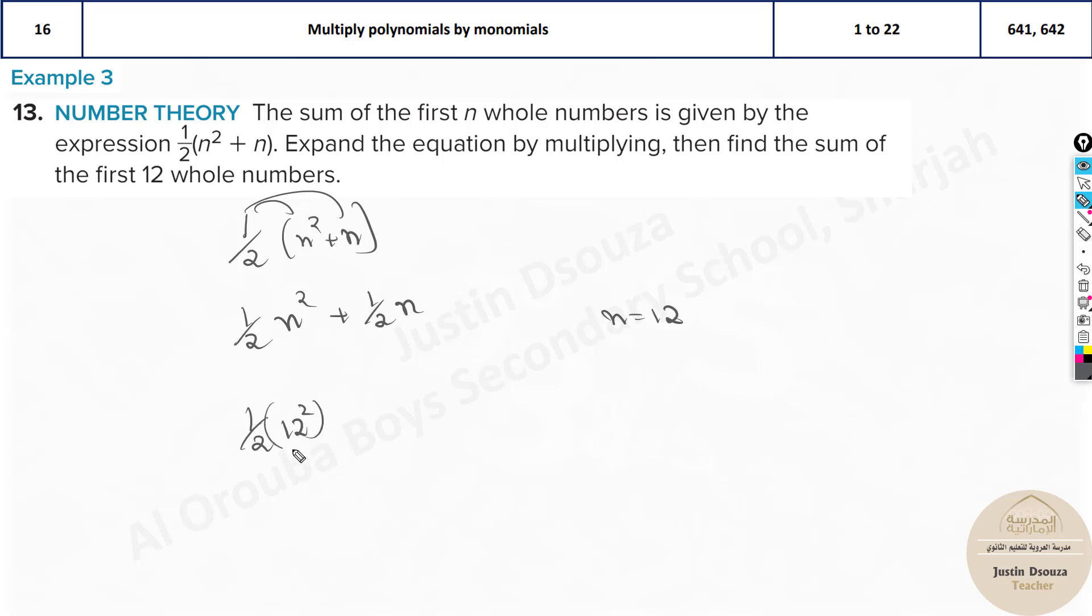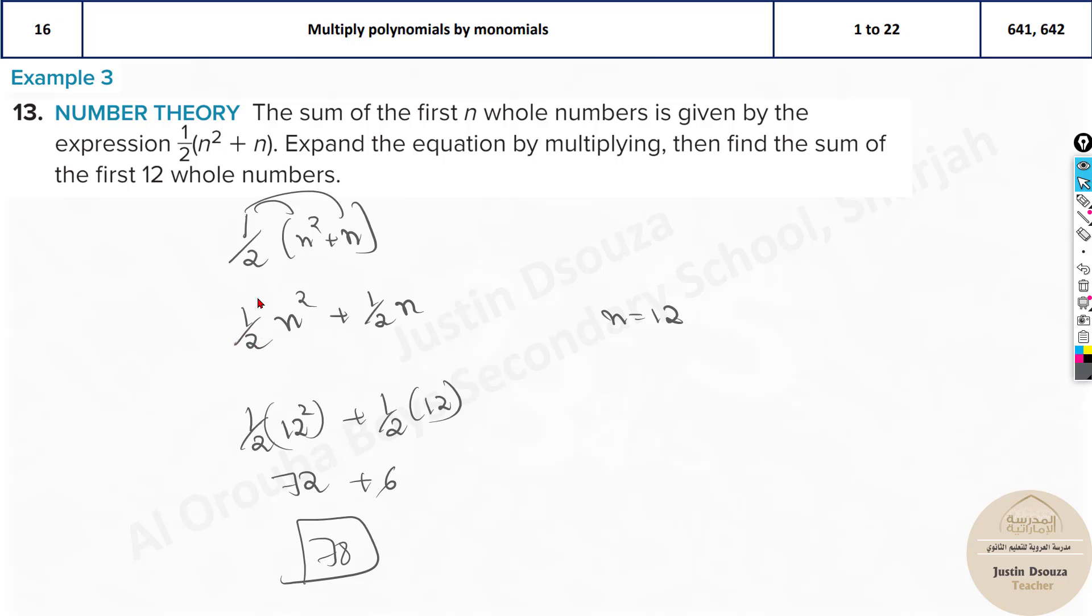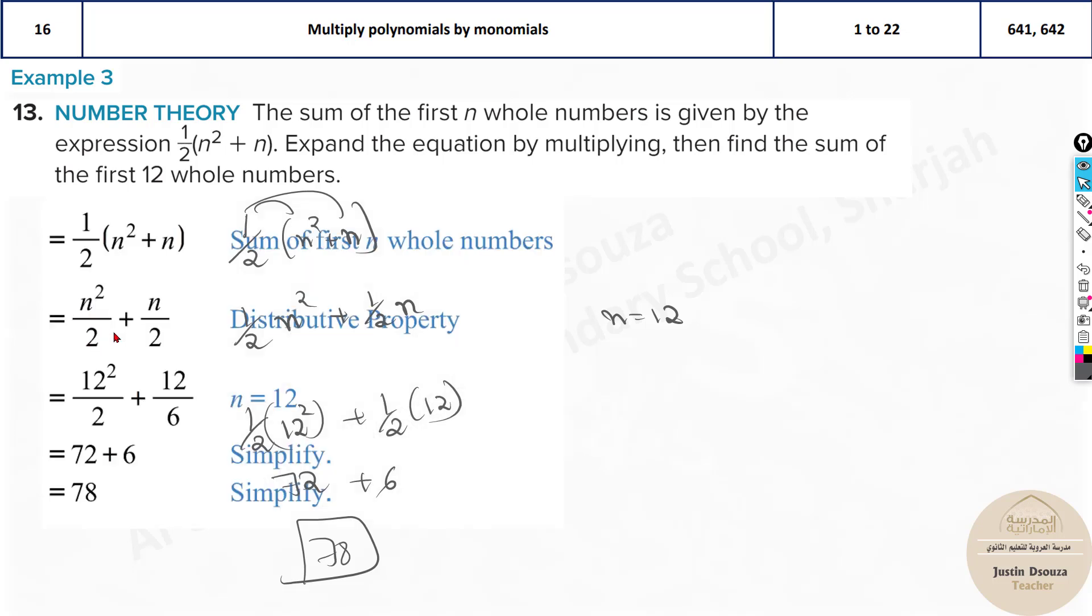They want the first 12 whole numbers. This is the sum of N whole numbers. Any number. But we just want first 12. So substitute N equals 12 and solve. It will be half 12 square plus half of 12. So 12 square is 144, half of that will be 72 plus 6, it will be 78. So that should be the answer.